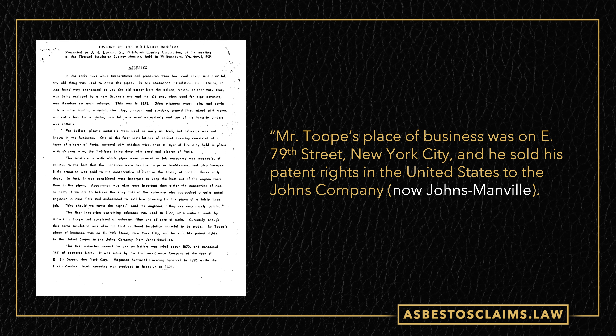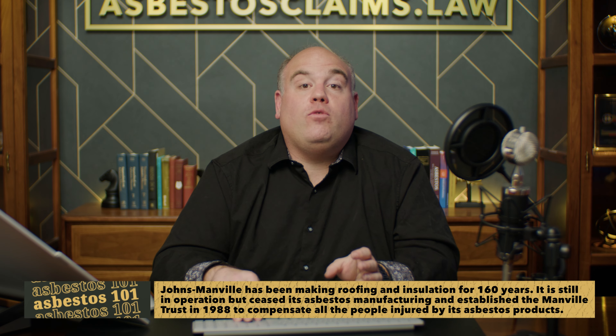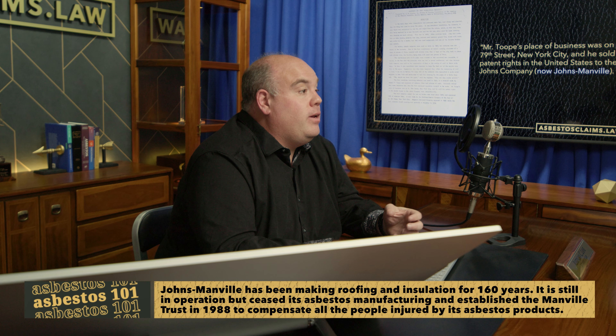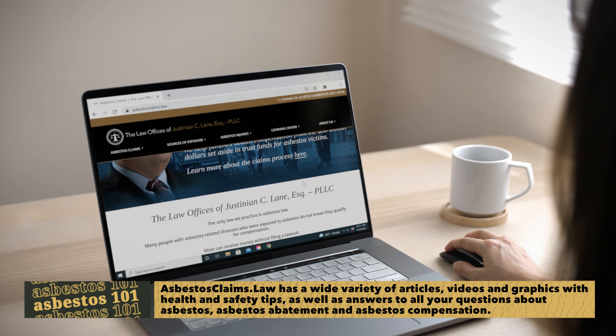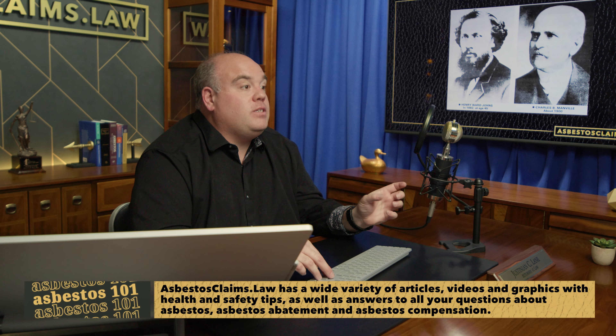Mr. Leighton continues that Toope's place of business was on East 79th Street in New York City, and he sold his patent rights in the United States to the Johns Company, now Johns Manville. Trying to talk about the history of asbestos without mentioning Johns Manville would be like talking about the history of the automobile without mentioning Henry Ford and the Ford Motor Company. This is a picture of Henry Ward Johns and Charles Manville, founders of Johns Manville. Johns Manville was the heavyweight of the asbestos industry from its founding. Their fibers found their way into 80% of all products with asbestos. They operated the huge Jeffrey mine in Quebec and made tons of different asbestos products.